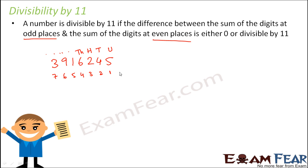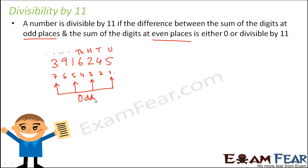Can you tell me what are the digits located at the odd places? Odd places means located at position 1, position 3, position 5, position 7 — because 1, 3, 5, 7 are odd numbers. So positions 1, 3, 5 and 7 are the odd positions. What about positions 2, 4 and 6? These are the even positions.